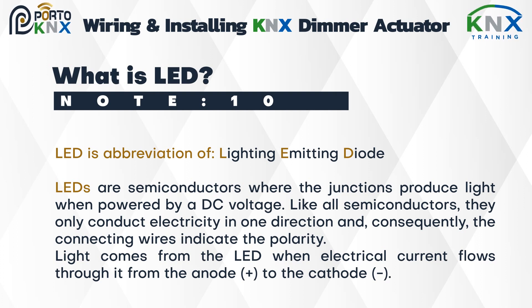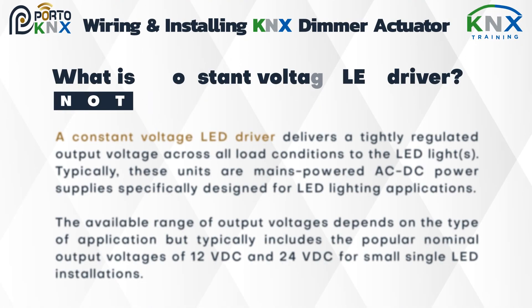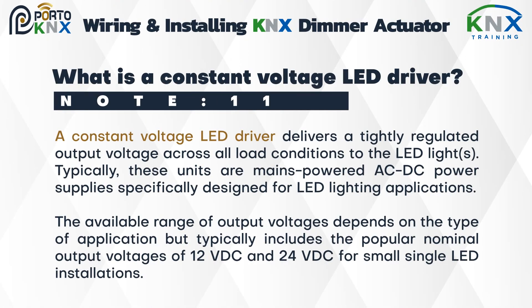Now let's understand what an LED is. LED is an abbreviation for Light Emitting Diode. LEDs are semiconductors where the junctions produce light when powered by a DC voltage. Like all semiconductors, they only conduct electricity in one direction, and the connecting wires indicate polarity. Light is emitted when electrical current flows from the anode (plus) to the cathode.